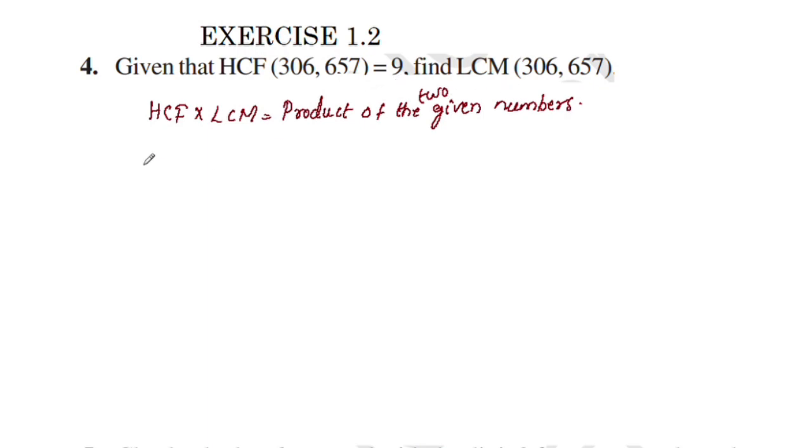Let's get started. Now, HCF of 306 and 657 into LCM of 306 and 657 is equal to the product of the two given numbers, 306 and 657.